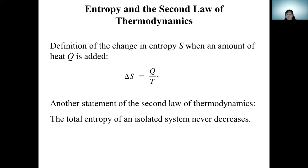Entropy. This is the formula for entropy: delta S equals Q divided by T, where delta S is entropy, Q is heat, and T is temperature. The second statement of the second law of thermodynamics: the total entropy of an isolated system never decreases.